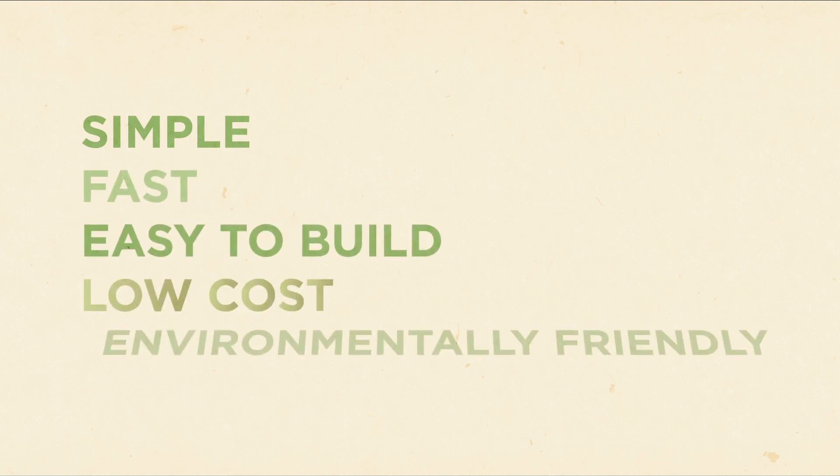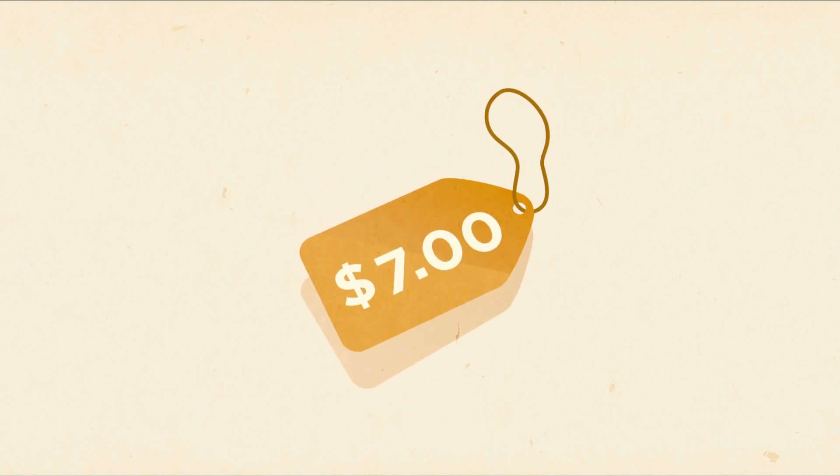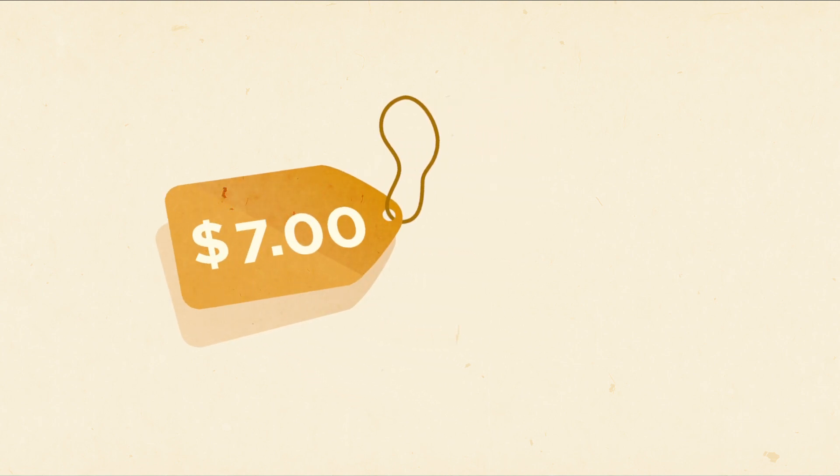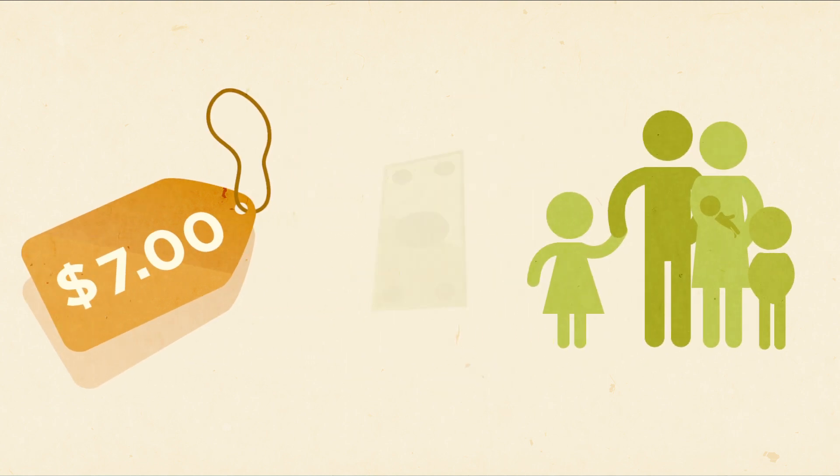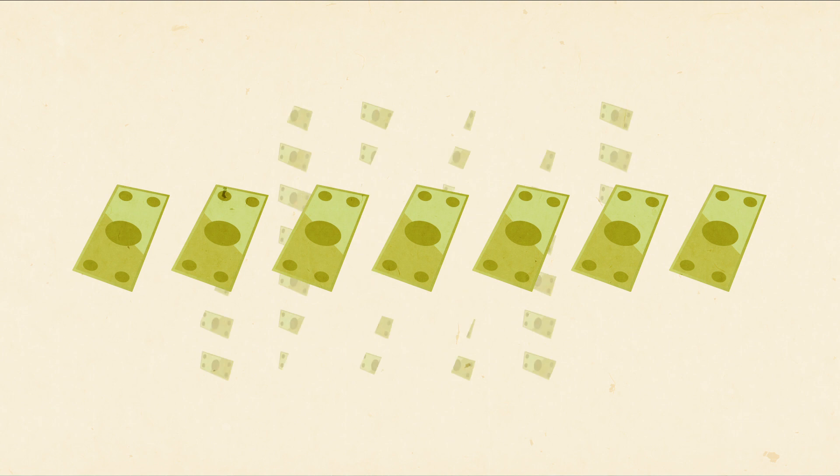Simple, fast, easy to build, low-cost, environmentally friendly. At a price tag of only seven U.S. dollars in rural Ethiopia, Catholic Relief Services have found that even the poorest families can afford one. That's seven U.S. dollars, just one-tenth of the price of the least expensive pit latrine.